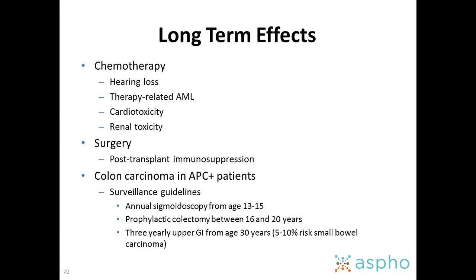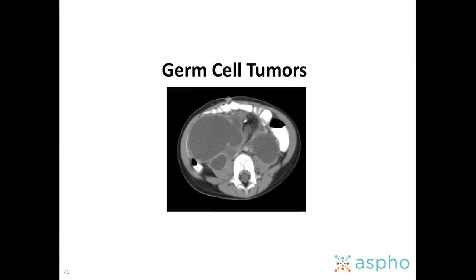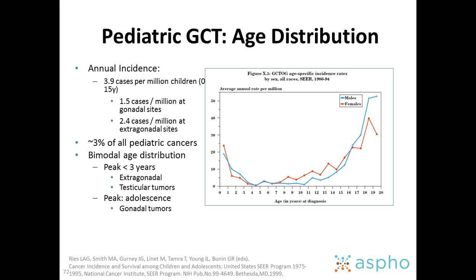There are many long-term effects associated with hepatoblastoma treatment, including hearing loss, therapy-related AML, cardiotoxicity, and renal toxicity from chemotherapy, as well as surgical effects. For patients with familial polyposis, remember that you need to follow them for the second malignancy, which is colon cancer. Over the next segment we'll talk about germ cell tumors, also a rare cancer.